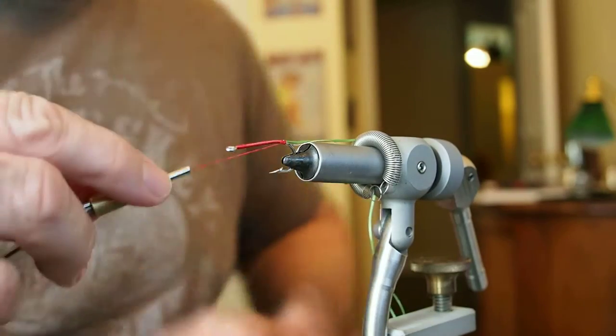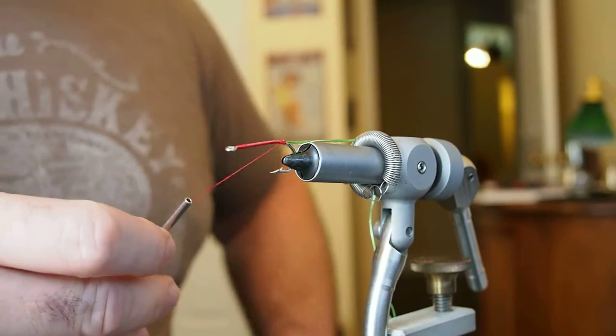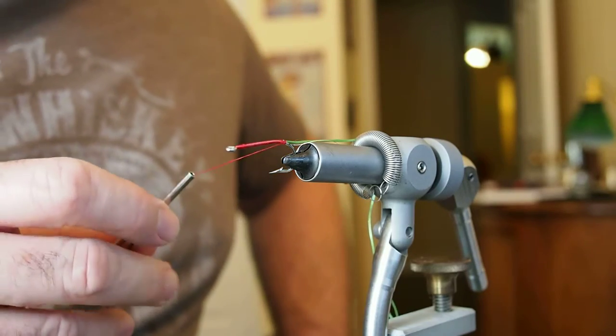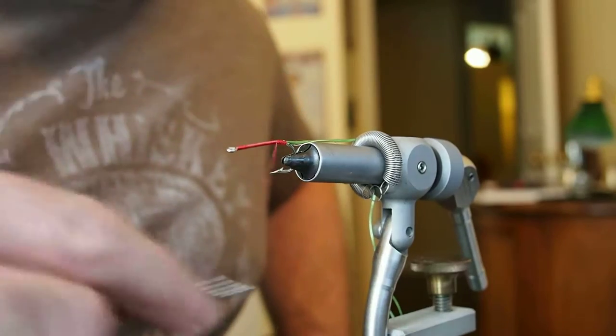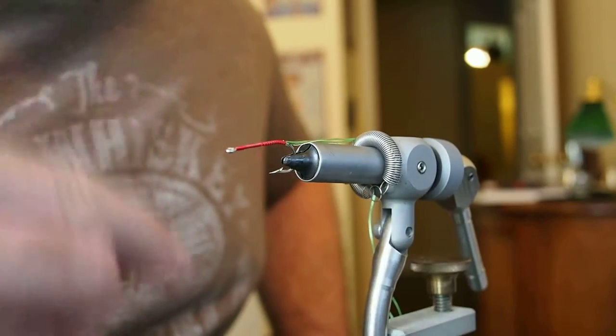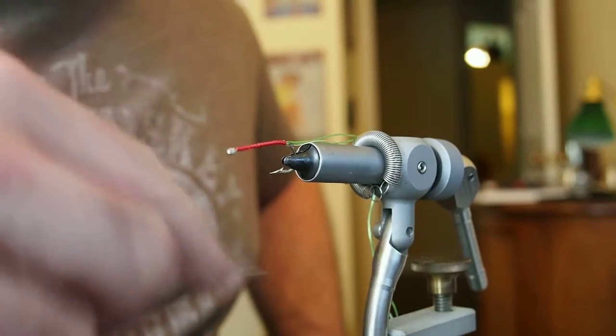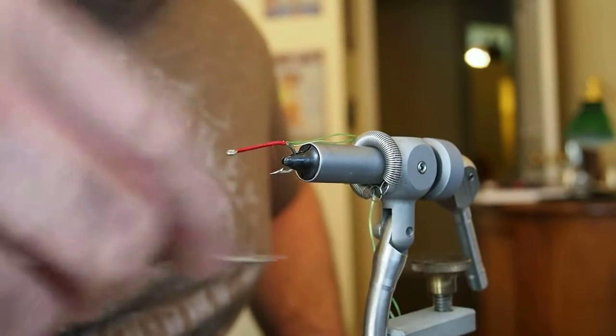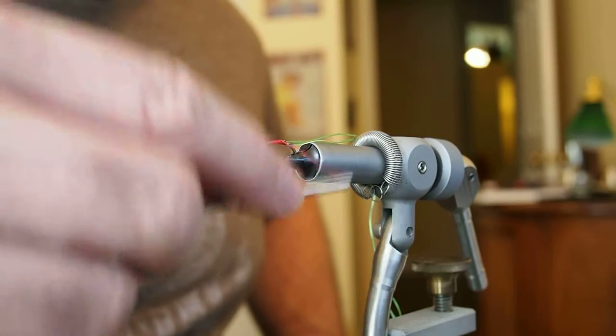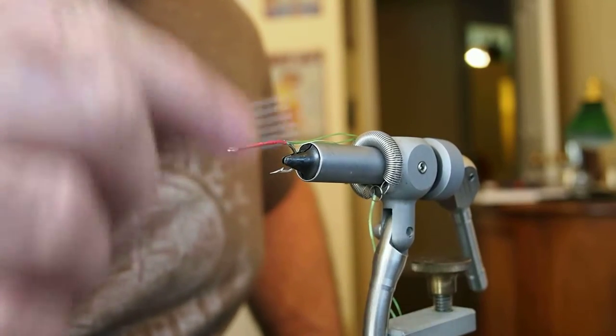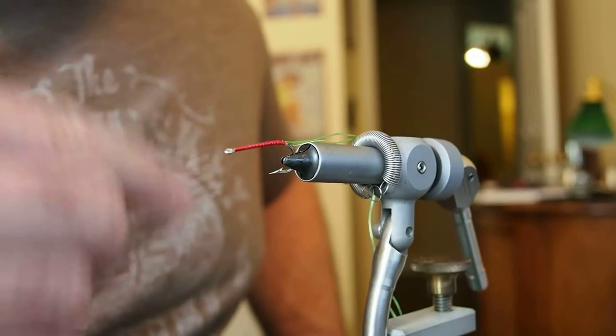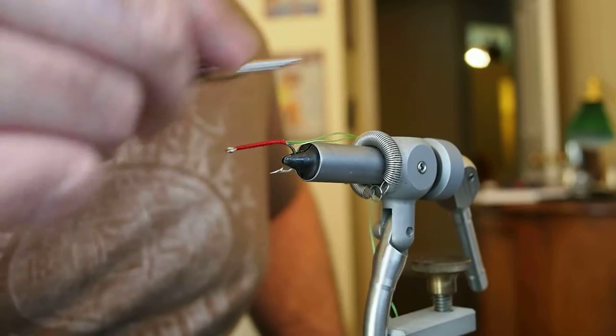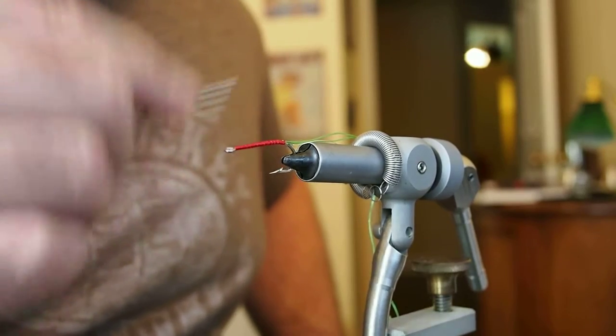Now, this fly calls for kind of a cigar-shaped body. And typically that would be done with the floss, but I'm going to go ahead and start to build that cigar shape with thread just to save materials. So I'm going to advance the thread back and forth, but just stopping short each time. So not quite to the end where I started, at the back of the hook or at the front of the hook. And we're going to do that several times just to kind of fatten up the body before we move to our floss.